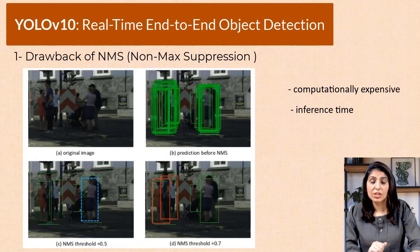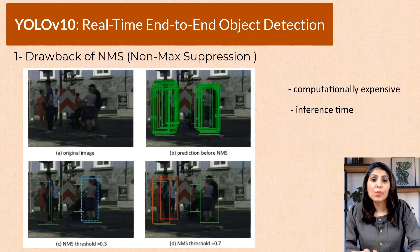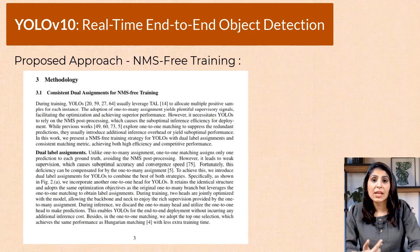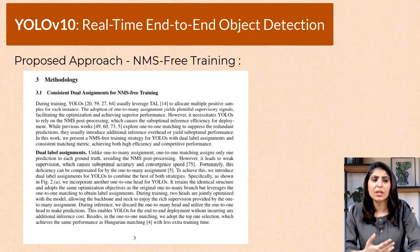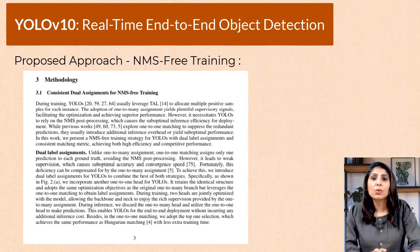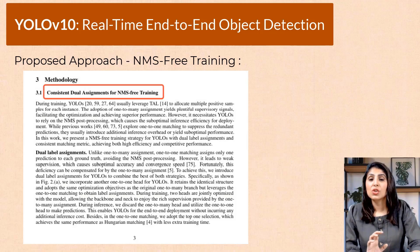Now let's see how the proposed NMS-free training approach works. In this approach, the model is designed and trained in such a way that it naturally avoids generating multiple bounding boxes for the same object. This is achieved through consistent dual assignments, which ensure that each object is assigned a single unique bounding box during both training and inference.